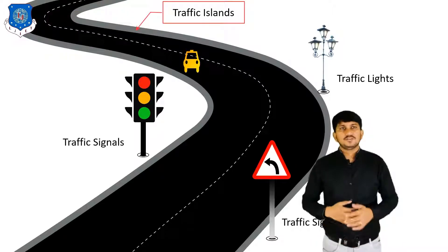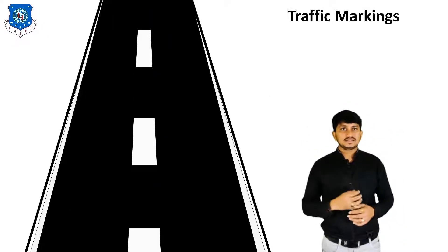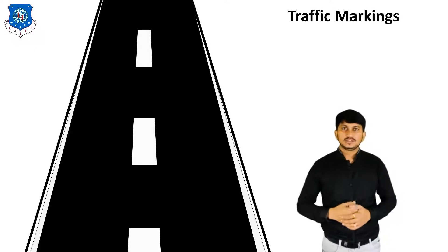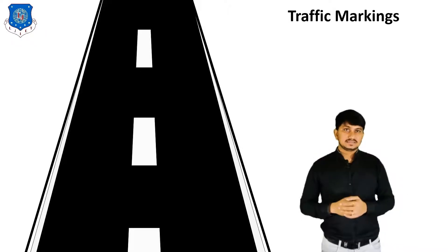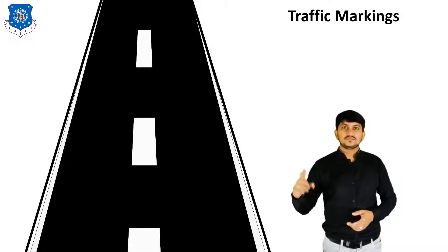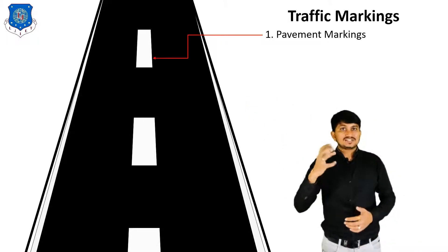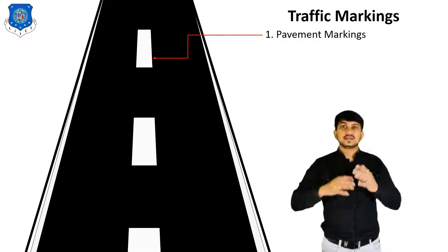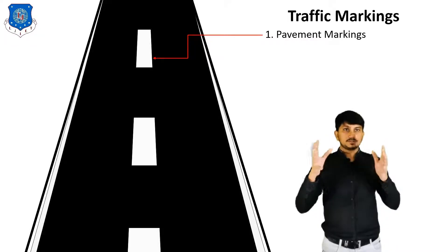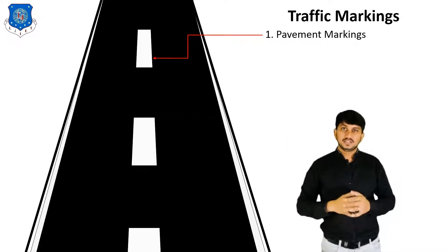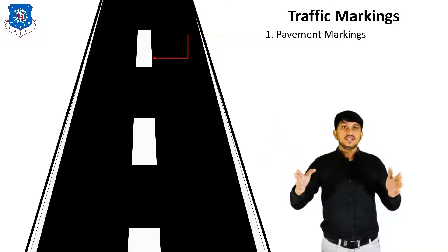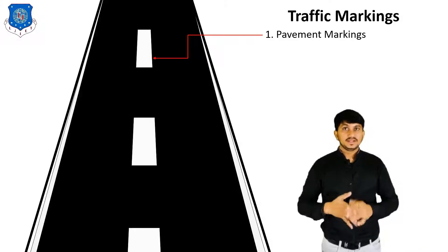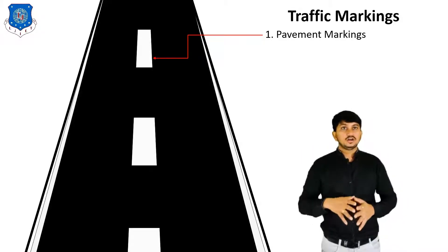Now let's move to the next traffic control device which is Traffic Markings. They are made of lines, patterns, words, symbols, or reflectors on the pavement, curb, dividers, or on fixed objects. They are made using paints in contrasting color and brightness. The first type is Pavement Markings — white strips in the middle of the road pavement are known as pavement markings. These strips can be marked differently for different purposes: a dotted line indicates one can change the lane while driving, while a solid line indicates one cannot change the lane or overtake vehicles. It helps in smooth and harmonious flow of traffic along guided lanes.